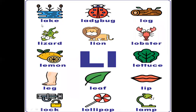Let's learn a few more words. This is a lake — where you find water that is closed. So that's a lake. What is this? A ladybug — a red color bug. L, la, ladybug. What is this? This is a piece of log. Log.